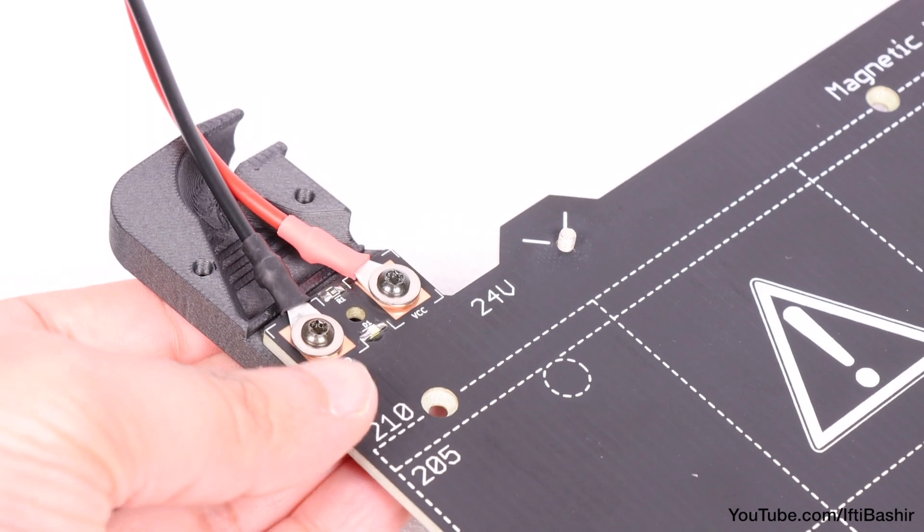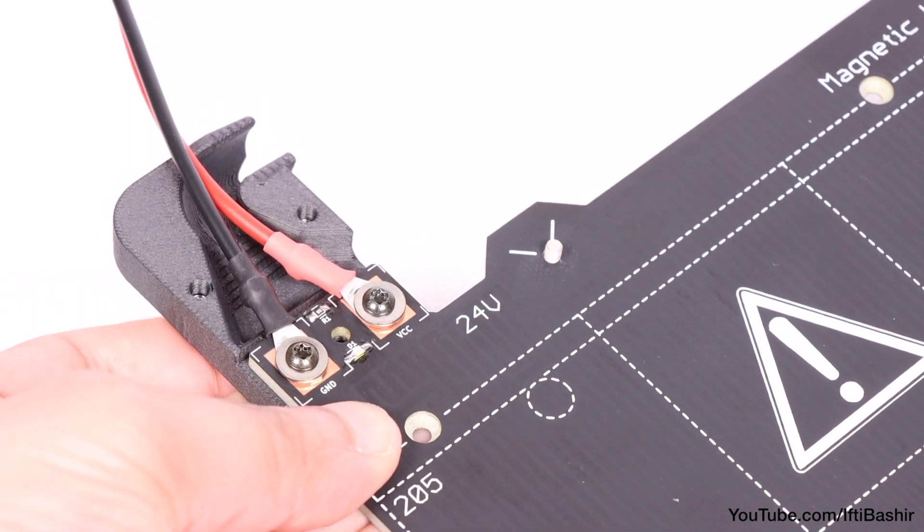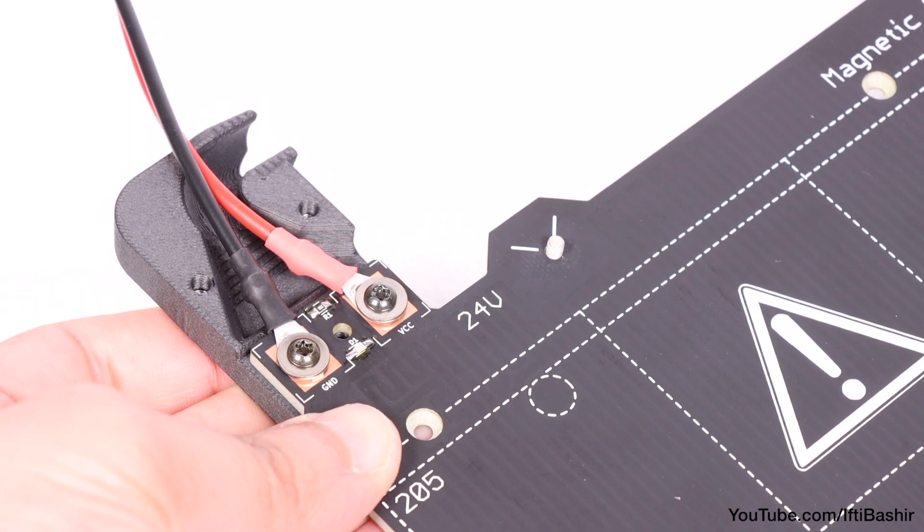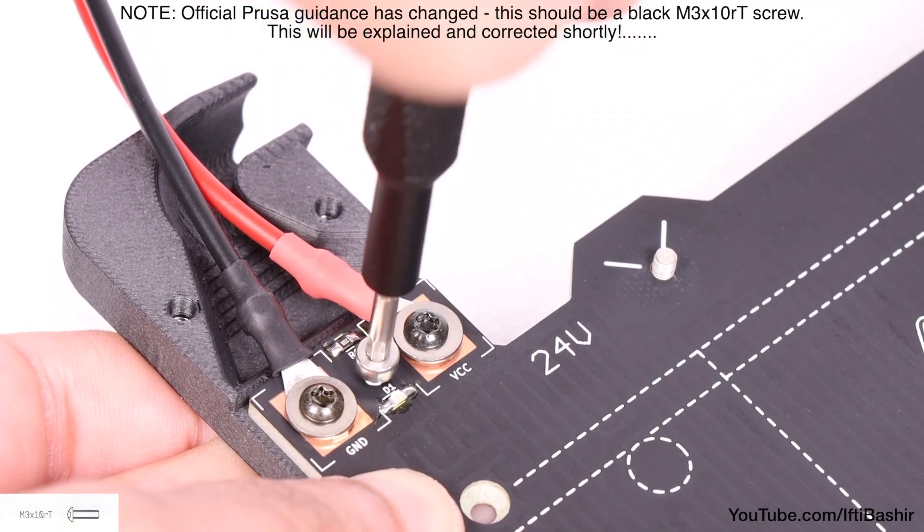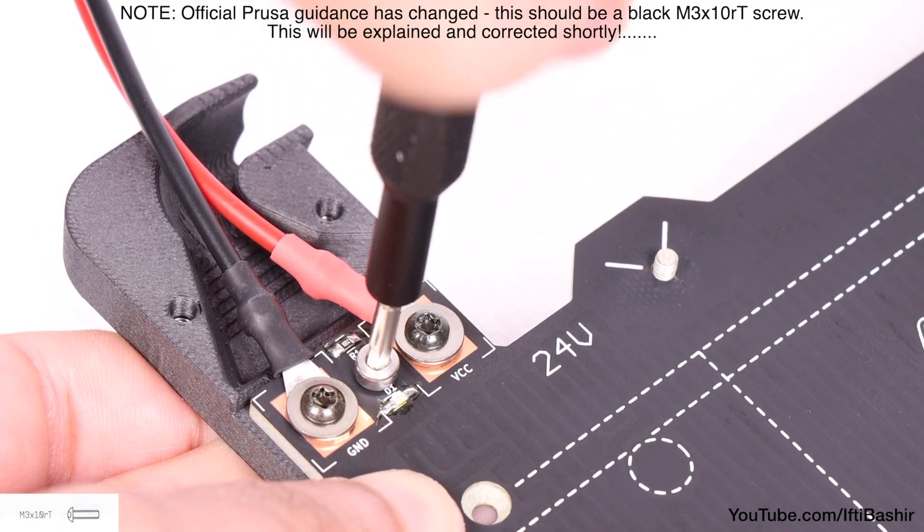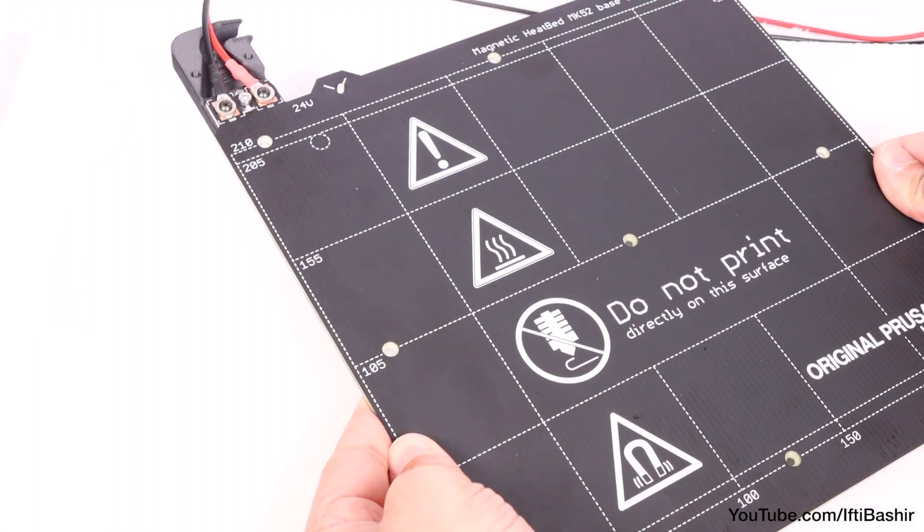Once done, place the cover underneath the two heat bed cables we just installed, taking care with orientation, and secure with a single M3 by 10 screw going in between the two power cables. With that prepared, place it to one side for the moment.